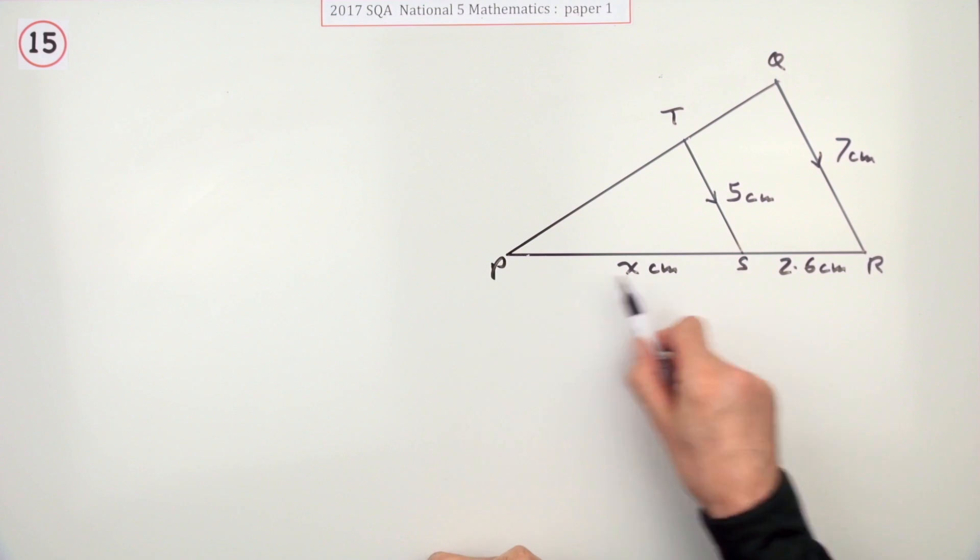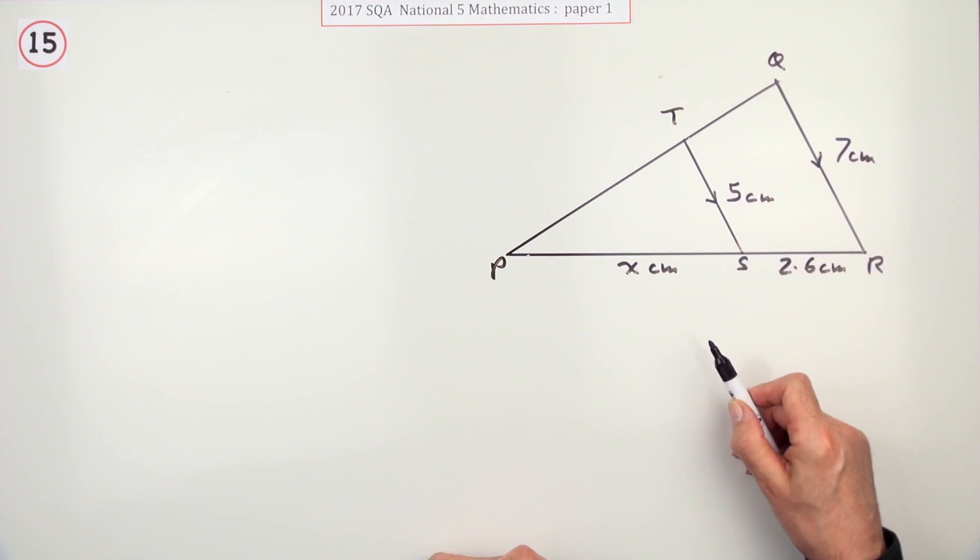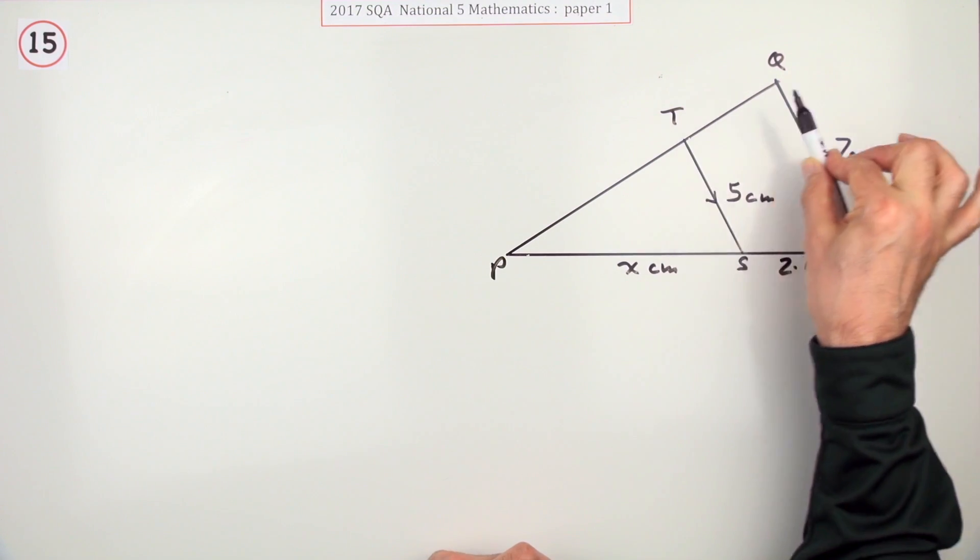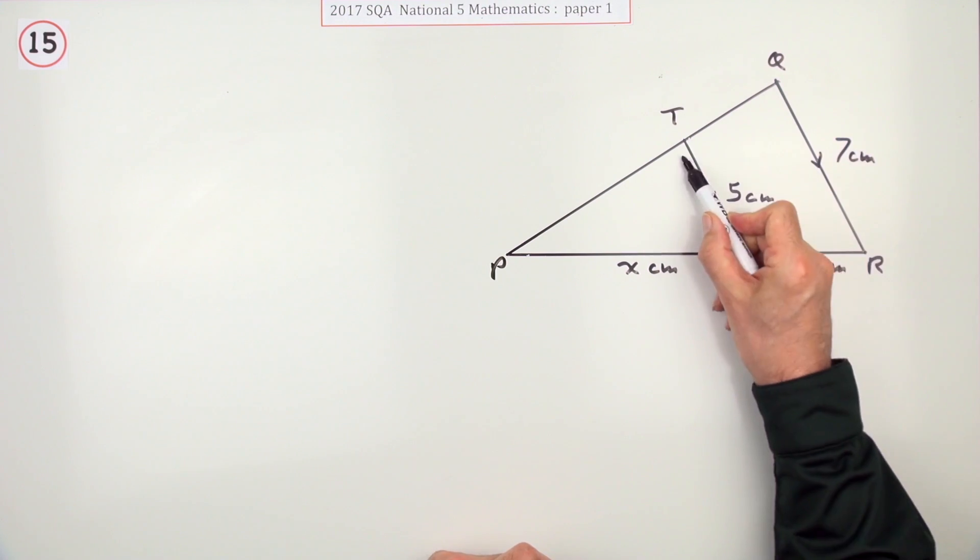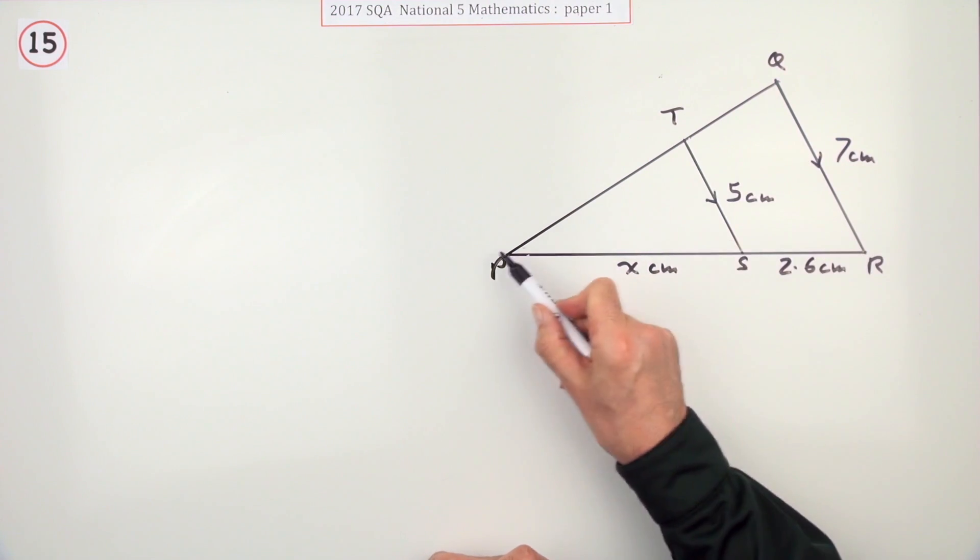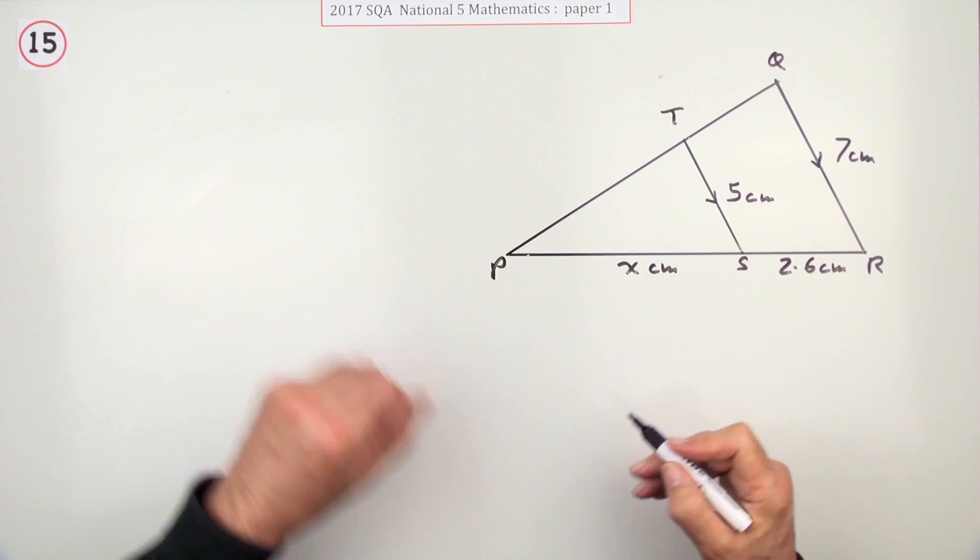Well, the first thing is, in order to use these similar triangles, because obviously they're similar, we've got the parallel sides, meaning you've got corresponding angles. So there's a small triangle and there's a large triangle, which I'll just put over here.